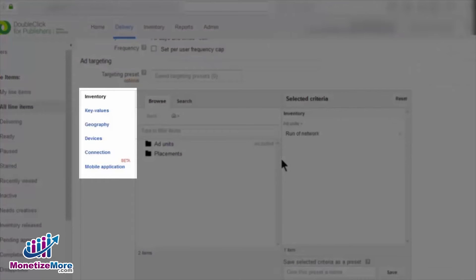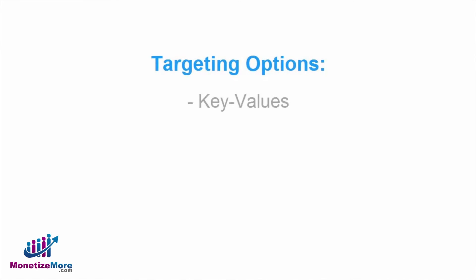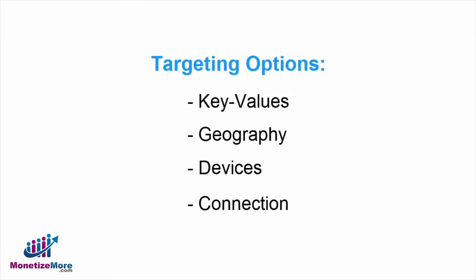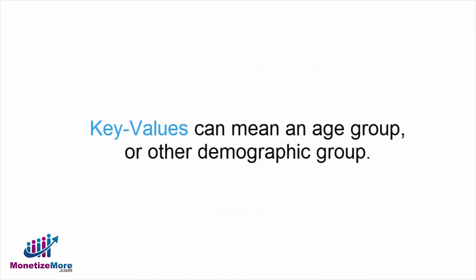Once we've chosen the inventory to target, DFP then presents a number of other options to choose from: Key Values, Geography, Devices, and Connection. Key Values are values the publisher defines based on data you collect through your site. For example, a key value can be an age group or other demographic group you define. Key Values merit their own conversation, and we'll discuss them in a later video. The other criteria are more straightforward.